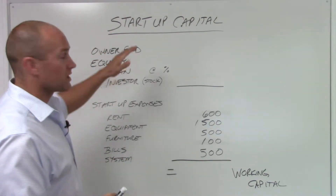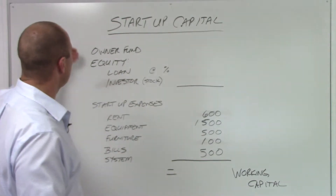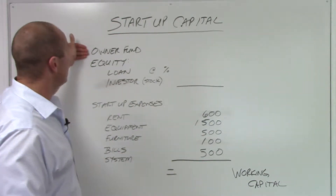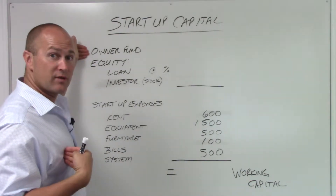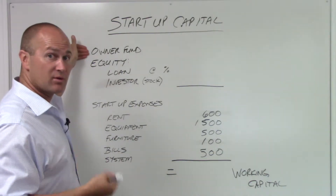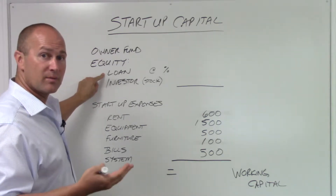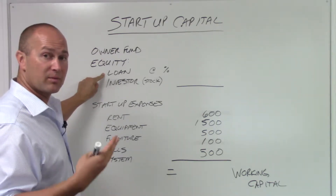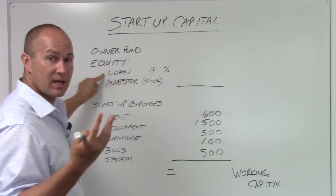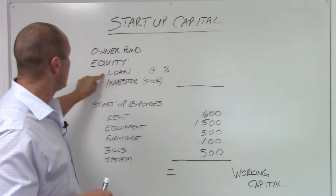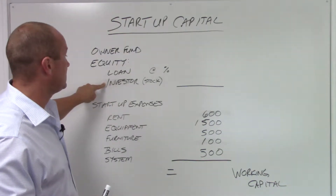We're looking at startup capital. You can get money from one: yourself, the business owner. Two: you can get a loan from the bank, from a friend, or from a parent — anyone. Or three: you could get an investor.